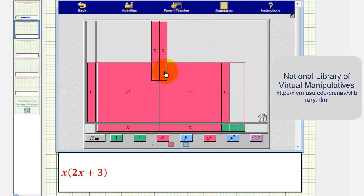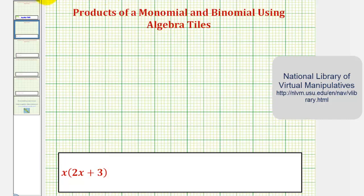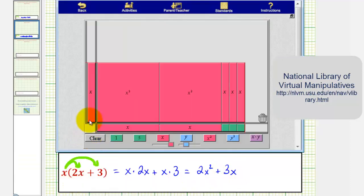The remaining area can be filled using x tiles. We have one, two, three x tiles. Notice how the total area would be two x squared plus three x, which is our product. Again, if we distribute, we would have x times two x plus x times three. Well, x times two x plus x times three does equal two x squared plus three x, which once again, we found using our algebra tiles.